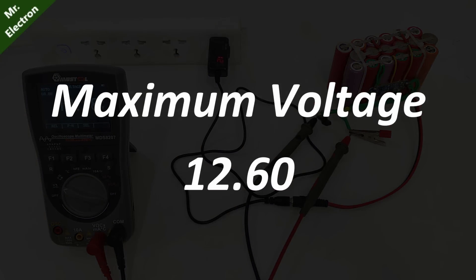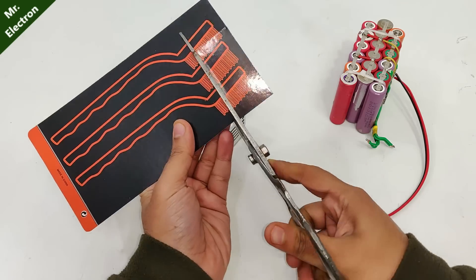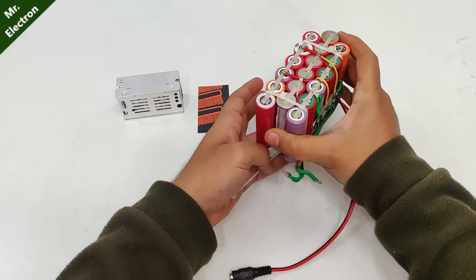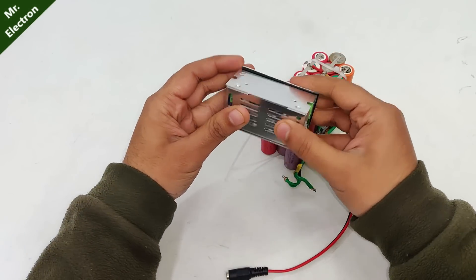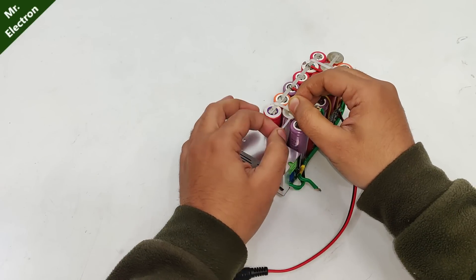Next what you will need is a separator between the buck boost module and your lithium ion batteries to prevent the heat transfer. Next zip tie the module and the batteries together.